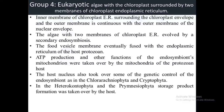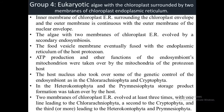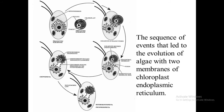It is probable that two membranes of chloroplast endoplasmic reticulum evolved at least three times, with one line leading to Chlorarachniophyta, a second to Cryptophyta, and a third or more leading to Heterokontophyta and Prymnesiophyta. This is the sequence of events that led to the evolution of algae with two membranes of chloroplast endoplasmic reticulum. I request you to take a screenshot of this and study it properly.